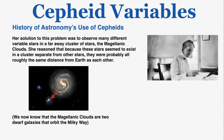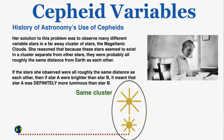She came up with a clever solution: observe many different variable stars in a faraway cluster — the Magellanic clouds. She reasoned that because these stars existed in a cluster separate from other stars, they were probably all roughly the same distance from Earth. We now know the Magellanic clouds are actually two dwarf galaxies orbiting the Milky Way. If the stars were all roughly the same distance from Earth, then if star A were brighter than star B, it meant star A was definitely more luminous than star B.